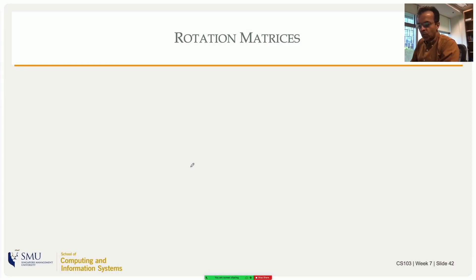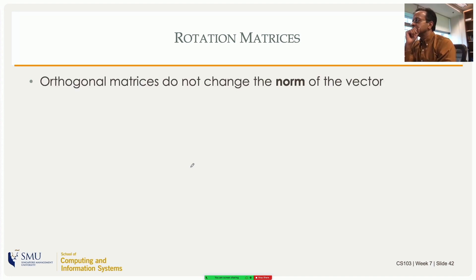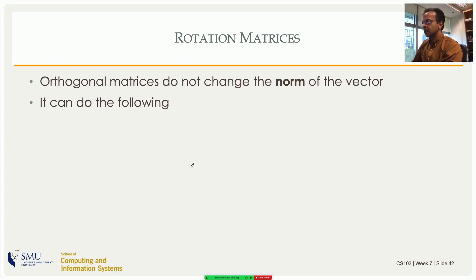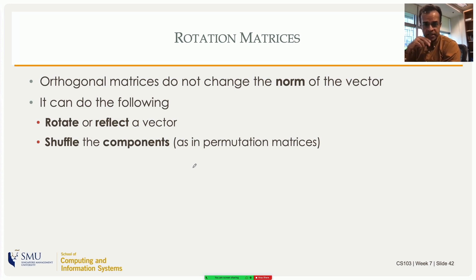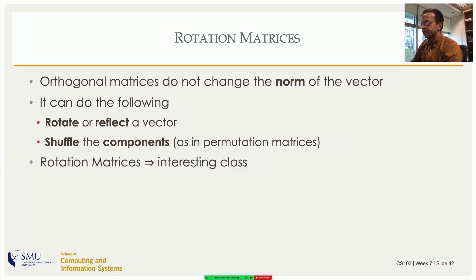Let's move on to what orthogonal matrices can do. One thing they can do is rotation. Orthogonal matrices do not change the norm of a vector, so they can reflect a vector, rotate it through some angle, or do something like shuffling components — permutation matrices. Single row-exchange permutation matrices are actually symmetric, which is why Q-transpose equals Q-inverse in that case. So all those things work out nicely — permutation matrices are orthogonal matrices.